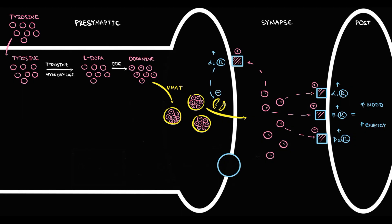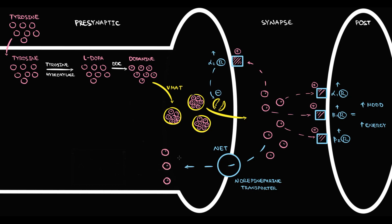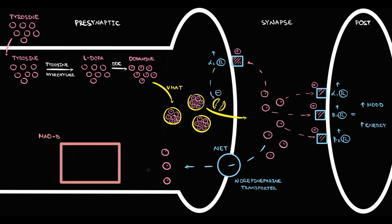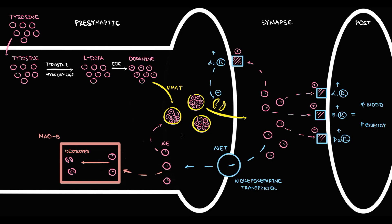What happens to norepinephrine molecules that did not have time to bind to any receptor? On the presynaptic neuron we have the norepinephrine transporter, called NET. This transporter uptakes free norepinephrine molecules and delivers them back to the presynaptic neuron, where monoamine oxidase B is waiting. Most delivered norepinephrine molecules are destroyed by MAO-B, but some slip away and rejoin the norepinephrine pool inside the vesicles.